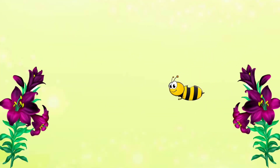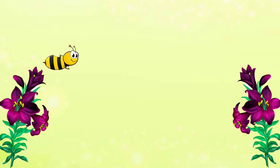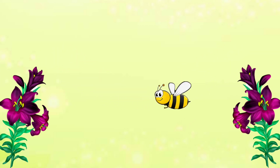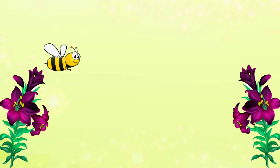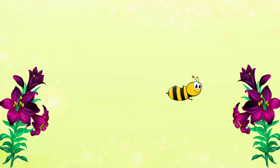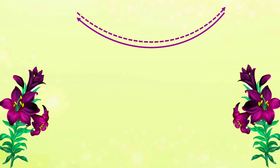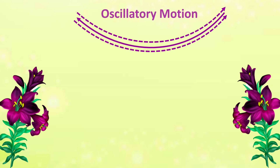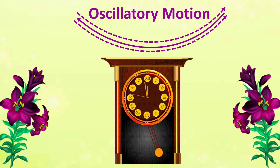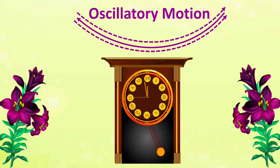Now watch the movement of the bee. The bee is going to the flower and again coming back to the same flower after a fixed time interval. This is known as oscillatory motion. You would have seen ancient clocks with a pendulum — the movement of the pendulum is oscillatory motion.